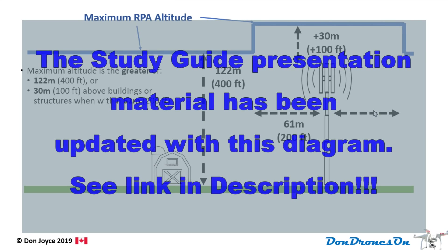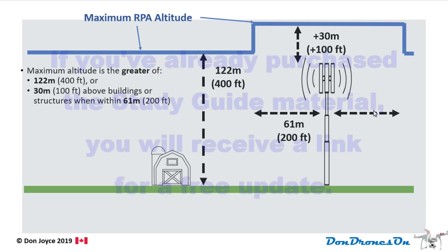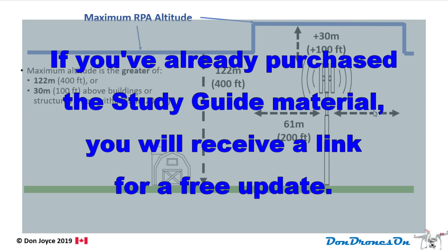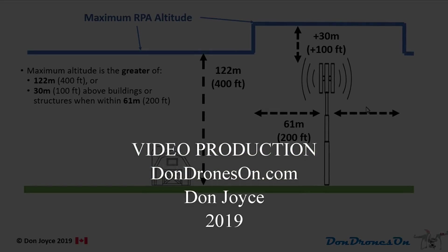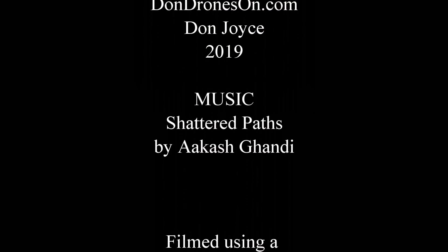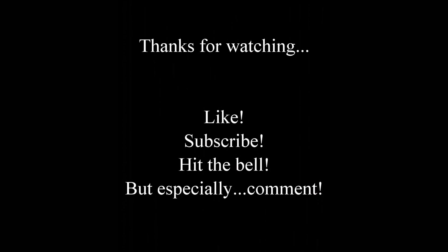So that's why I word it as: the maximum altitude is the greater of 122 meters or 30 meters above buildings or structures when within 61 meters of them horizontally. A picture is worth a thousand words and I think it's a lot clearer now to me — I hope it is to you. If not, drop me a comment below and I'll try one more time. Thank you very much for watching. Like and subscribe below, and if you want to be notified of a new video from me, tick the little bell beside the subscribe button. Thank you again for watching. Bye-bye.